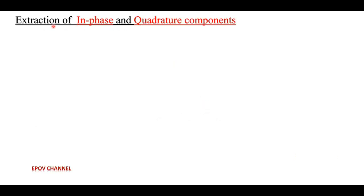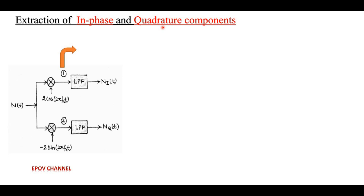Next, at the receiver side, there is a process of detection or extraction of the in-phase and quadrature components of the narrowband process. The narrowband noise process N(t) is individually multiplied by the locally generated carrier — 2·cos(2πfct) for the in-phase component, and −2·sin(2πfct) for the quadrature component. After passing through a low pass filter, we get both components.